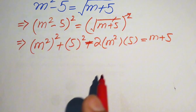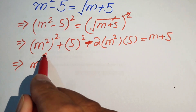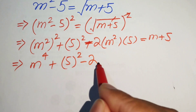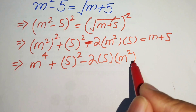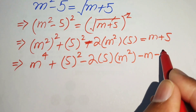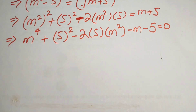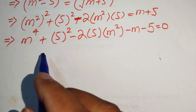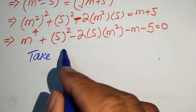In the next step we move m plus 5 to the left hand side. It is written as m⁴ + 25 - 2·5·m² - m - 5 equals 0. Now here our different technique is used — we need a substitution, so we take 5 equals x.